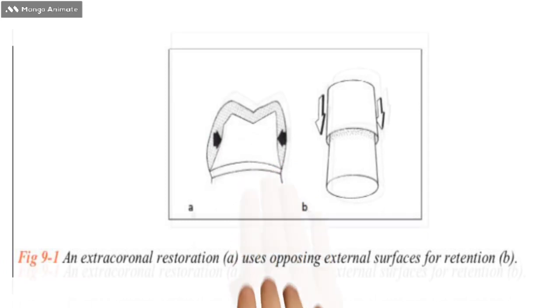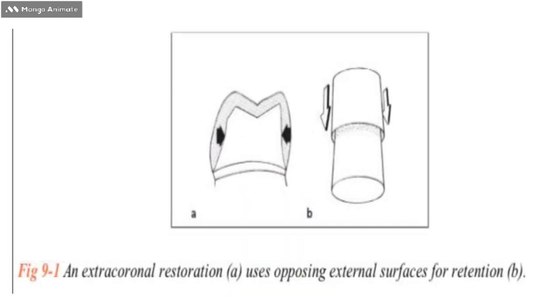This kind of retention in an extracoronal restoration is called sleeve retention. It will be clear if you understand this figure. Here an extracoronal restoration is shown in A, and in B you can see the arrows pointing downward. Remember when we defined retention, we said it's resistance against the vertical forces that are away from the occlusal surfaces. It is using an opposing external surface for retention, and this is called sleeve retention.